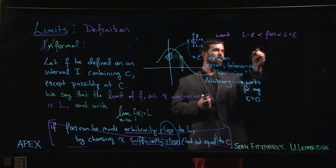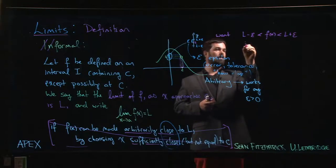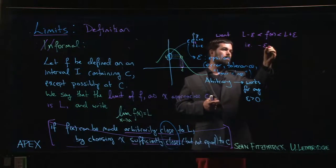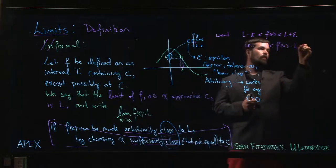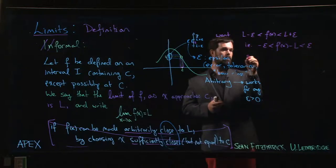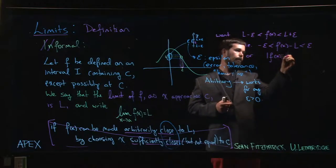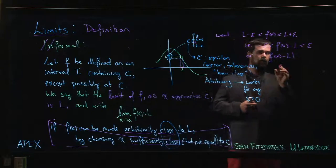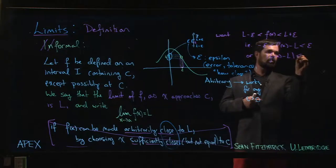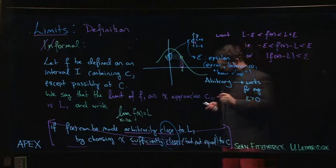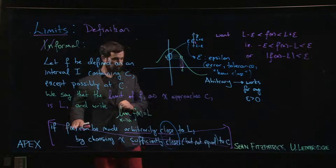We want f(x) to be in the range from L minus epsilon to L plus epsilon. We can rewrite this by subtracting L from all three parts of the inequality, or equivalently, we need the absolute value of f(x) minus L to be less than epsilon. Remember, this absolute value is just a distance — how far apart these two numbers are.